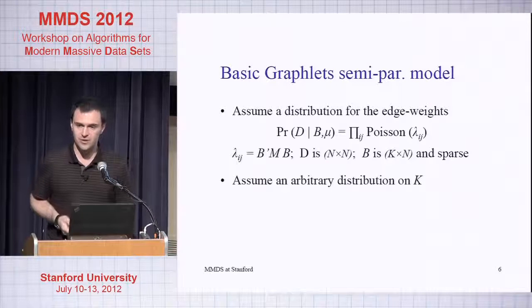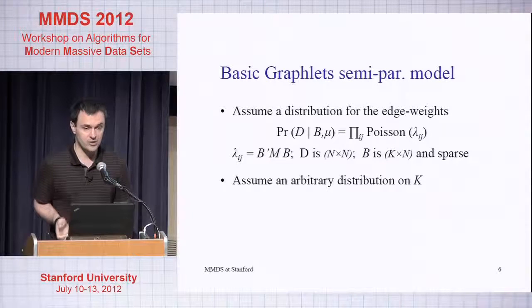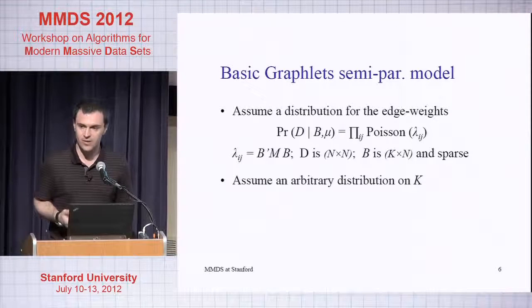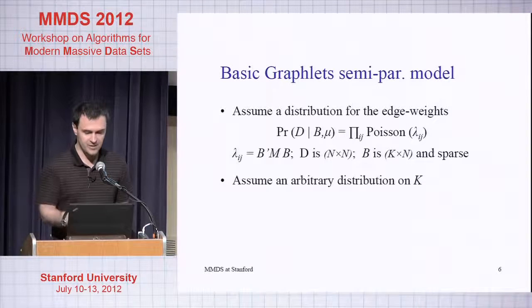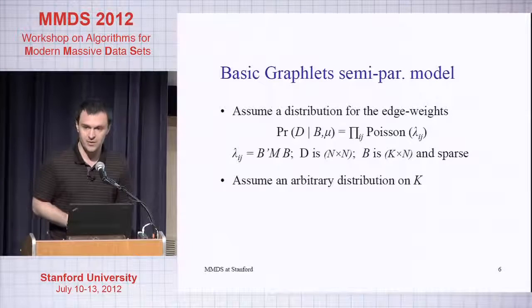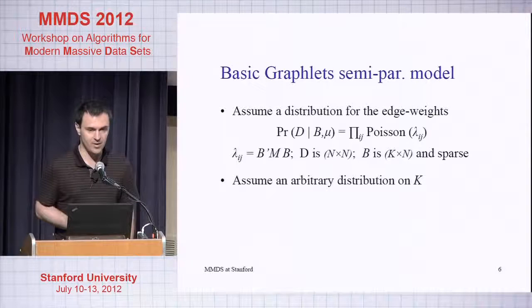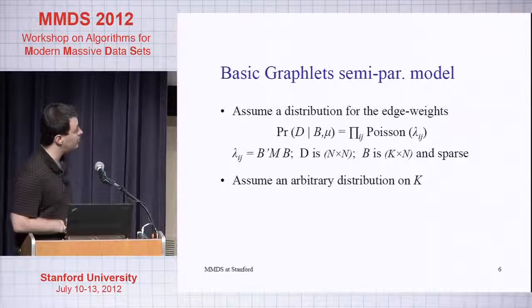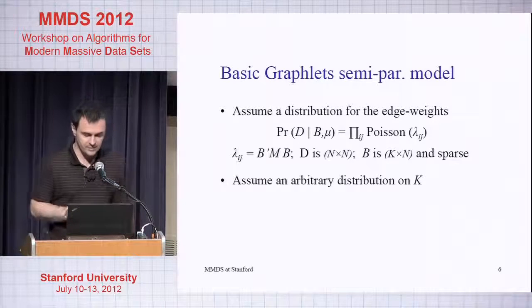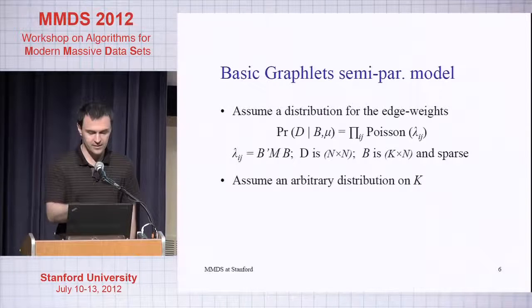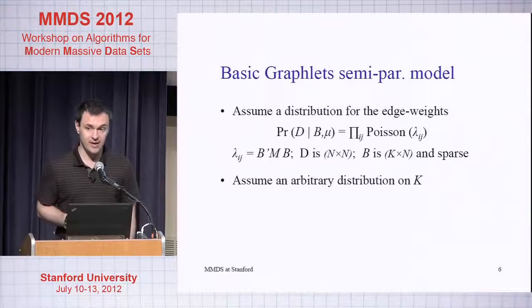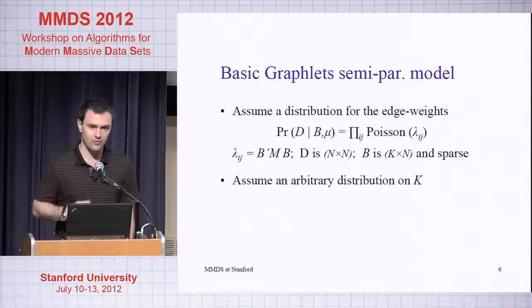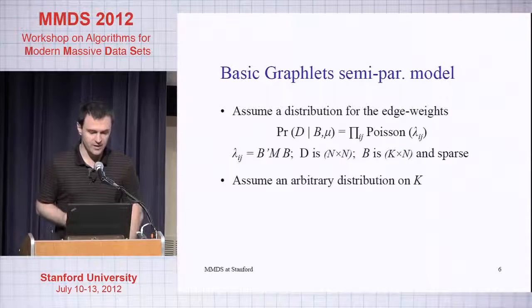Entries, integer entries of my adjacency matrix, are IID Poisson, and all the work, all the compression, happens at the level of the rates. We have an n by n adjacency matrix, we have an n by n rate matrix lambda.